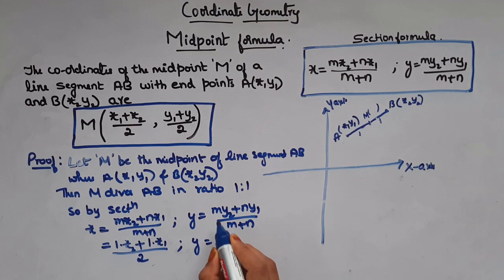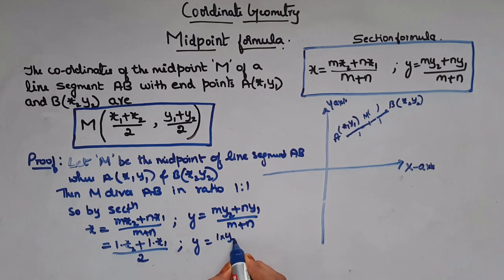Similarly, y is m is 1 into y₂ is y₂ plus n is 1 into y₁ by m plus n is 1 plus 1, which is 2.